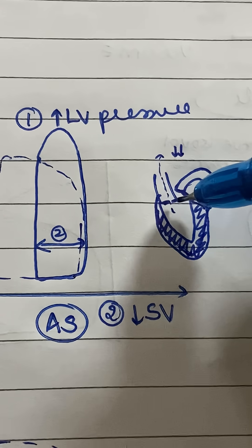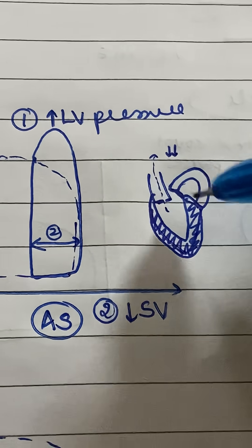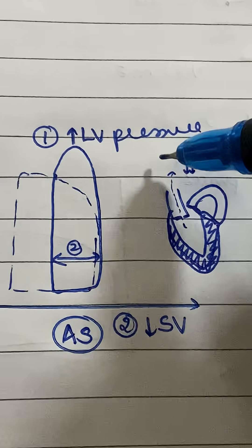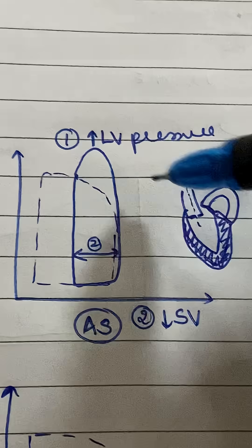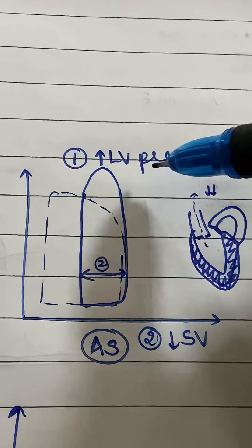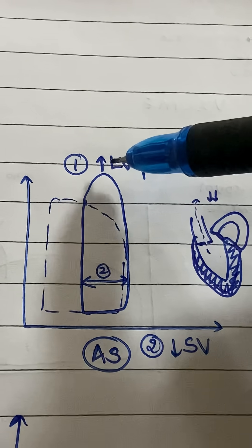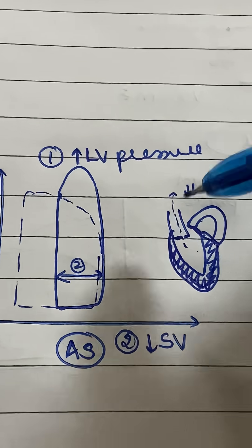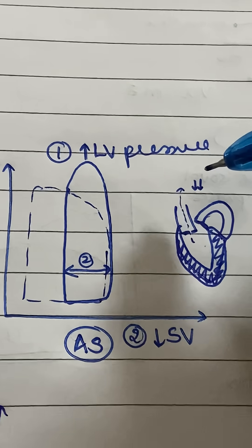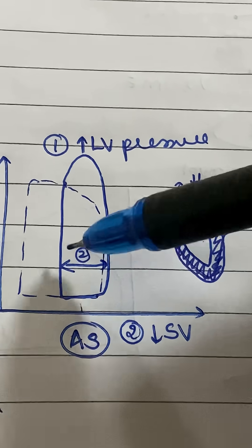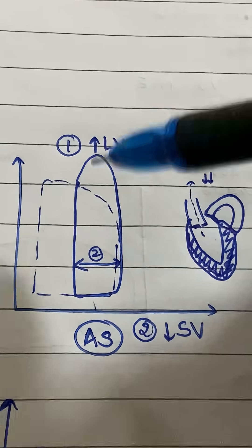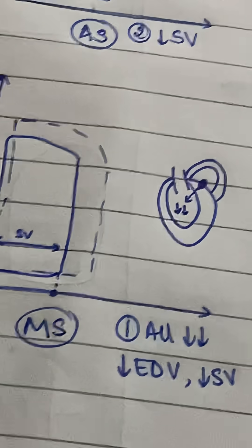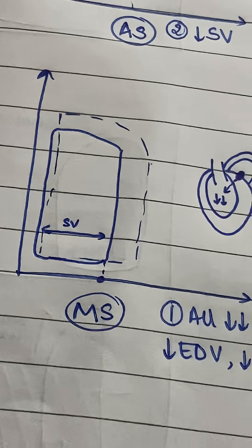Aortic stenosis: the aorta is stenosed, so your ventricle has to contract extra hard to push blood through this thin opening. That means left ventricular pressure is going to be really high. But even though it's contracting extra hard, the amount of blood eventually leaving is actually quite less, which is why stroke volume is less — and this is how the curve looks.